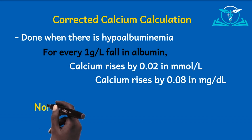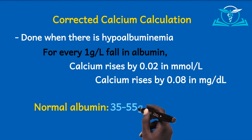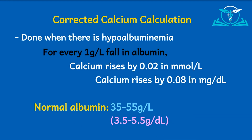The normal albumin level is 35 to 55 grams per liter, or stated in grams per deciliter, 3.5 to 5.5 grams per deciliter. We will use grams per liter for convenience. It must be mentioned that, according to UpToDate, despite the widespread use of this formula in clinical practice, more contemporary studies suggest the accuracy of this estimate is quite poor in a variety of populations. However, we still use it in clinical practice.